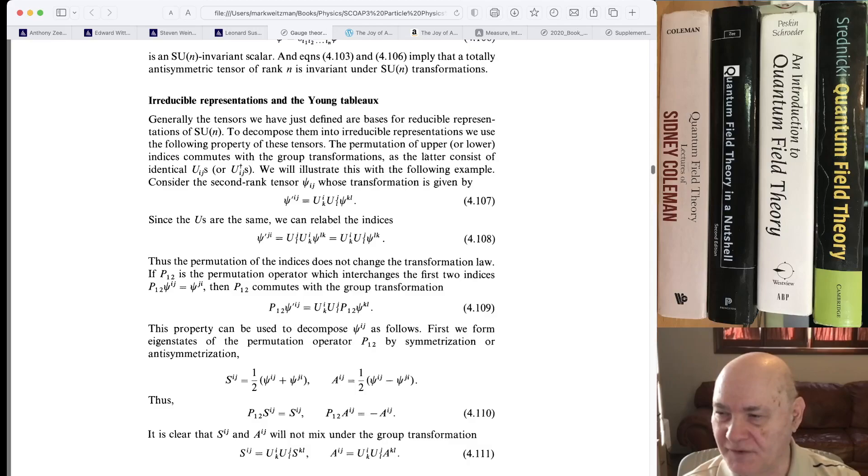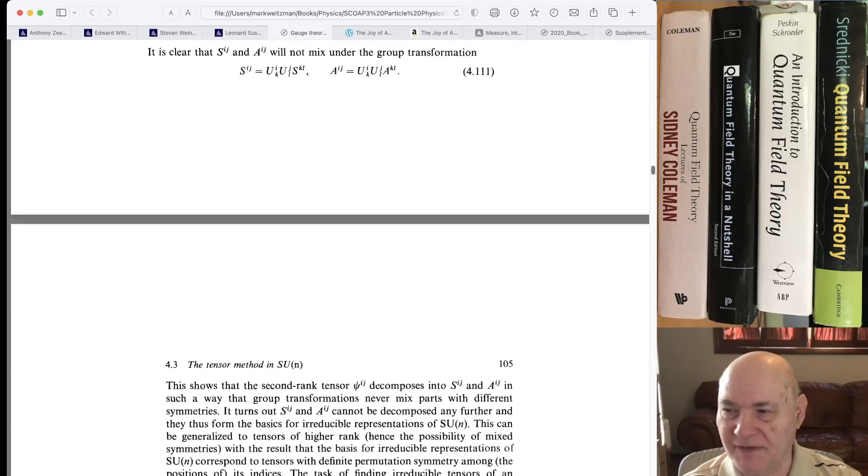If you look at equation 4107, that's your typical tensor transformation. And then they just relabeled the indices, and then it shows that the permutation of the indices does not change the transformation law. So you can show how a given permutation will commute with the tensor transformation. And that's the key property. As you learn in quantum mechanics, your idea is to find a maximal set of commuting operators, and here that's done.